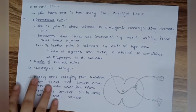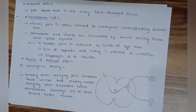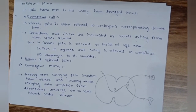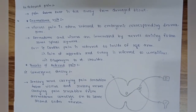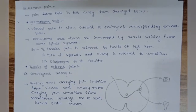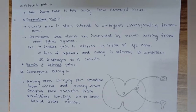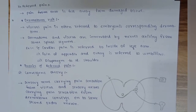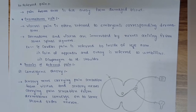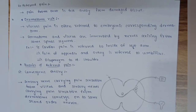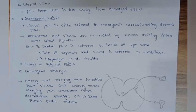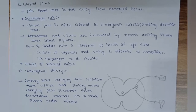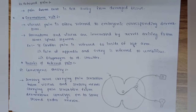The second type is referred pain — pain felt away from the damaged tissue. The main role in referred pain is played by the dermatome rule. Visceral pain is often referred following the embryonic dermatome, and the viscera are innervated by nerves arising from the same spinal segment. Examples: cardiac pain is referred to the inside of the left arm; pain of appendix and ovary to the umbilicus; diaphragm pain to the right shoulder.